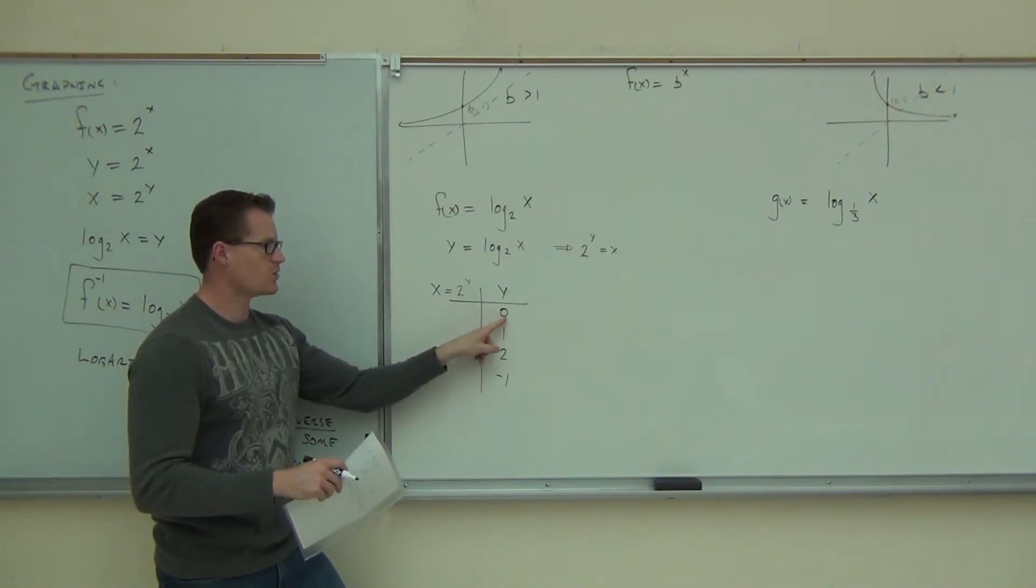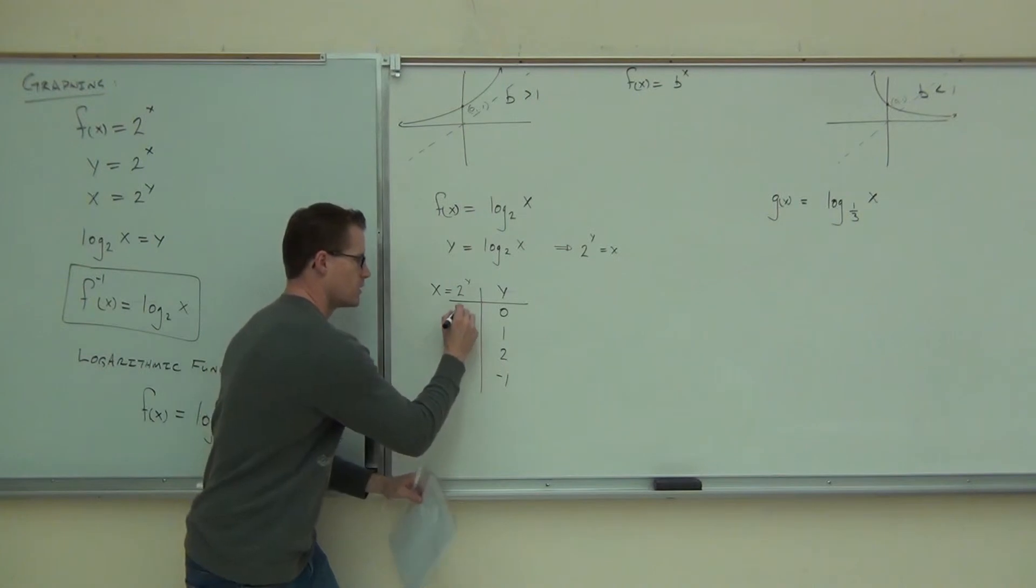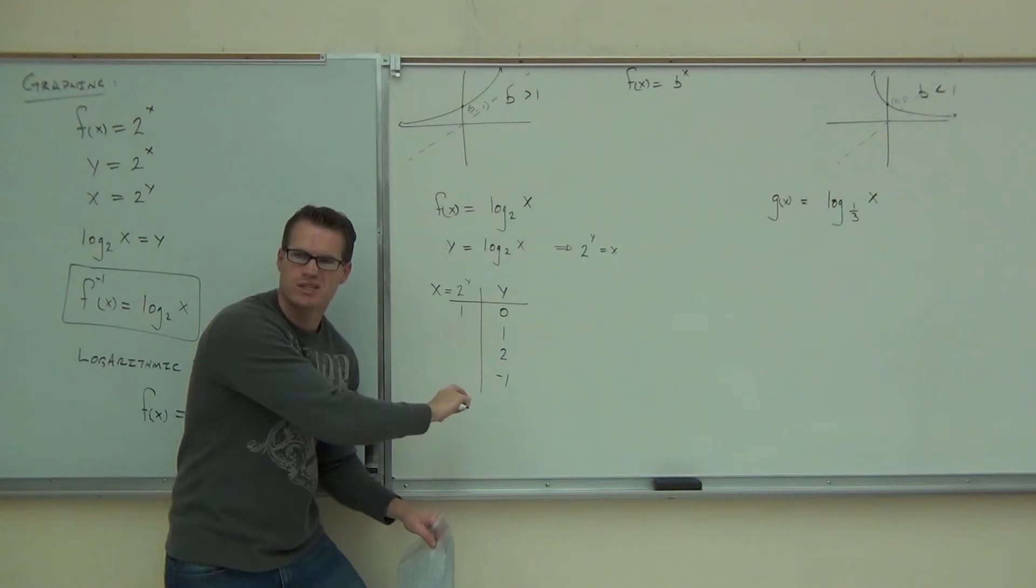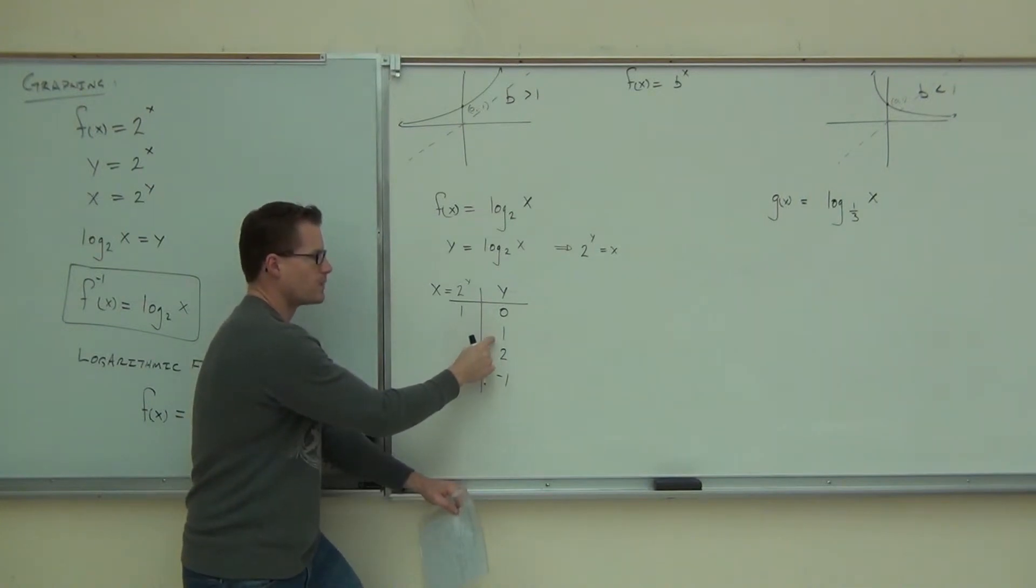So, if I plug in 0, everybody, what is 2 to the 0, please? It's still giving me a point, didn't it? This x, that's why. I'm just finding x a little bit differently. Let's plug in 1. What's 2 to the first power, please? Okay. How about 2? What's 2 to the second power?